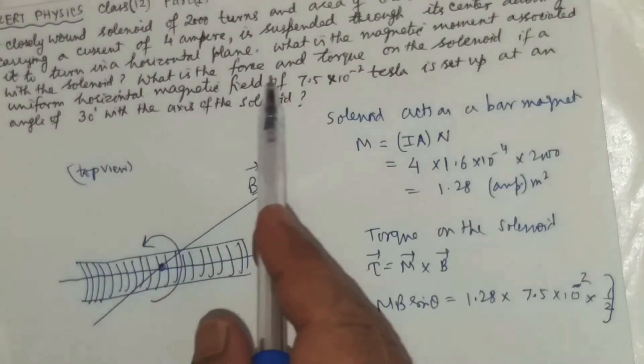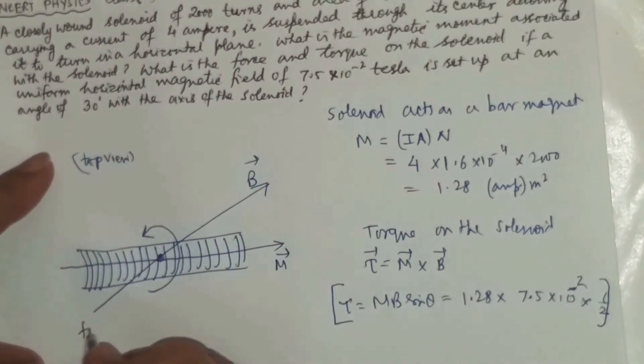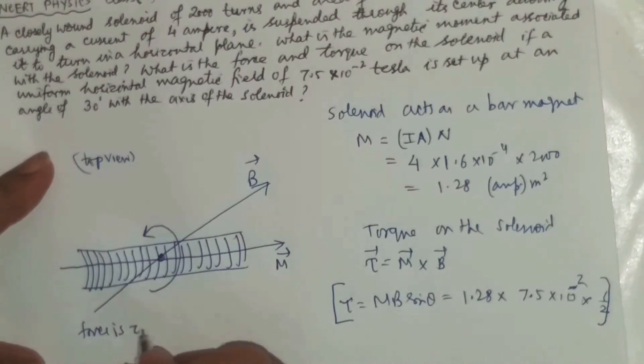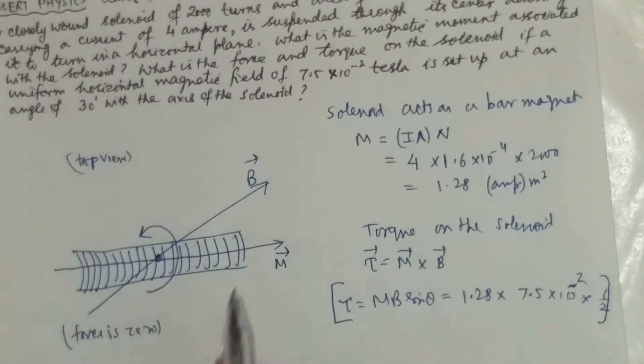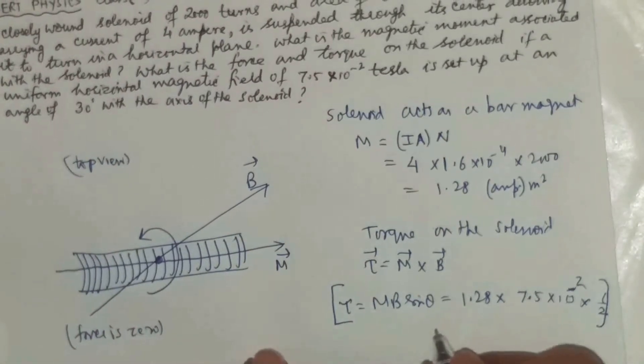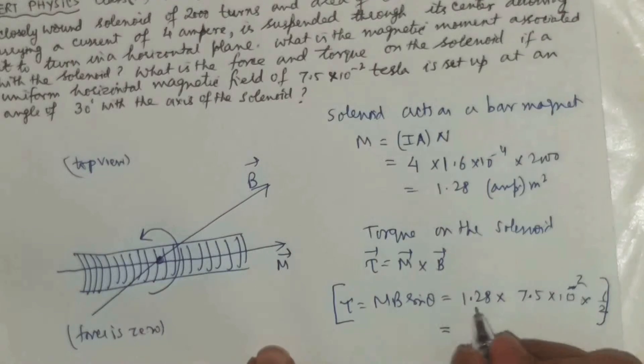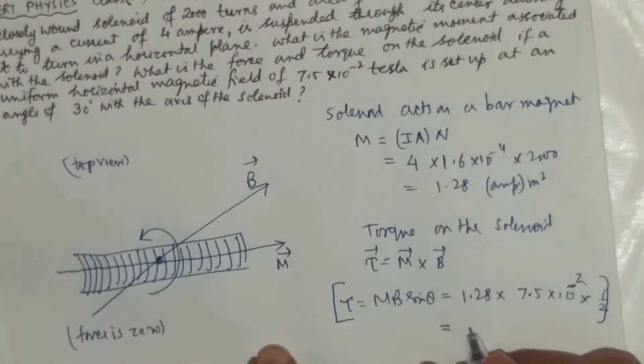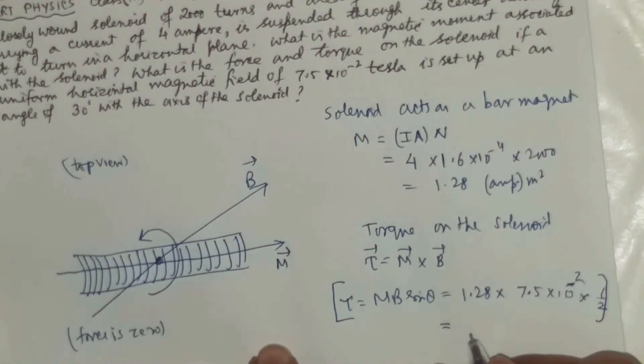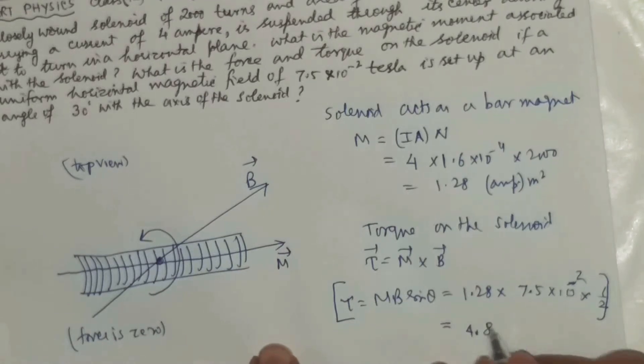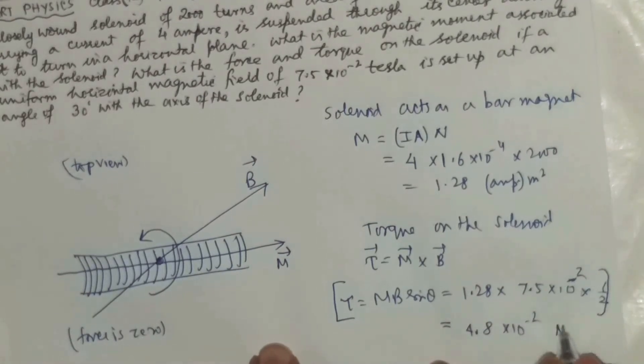Let me check what is the force. Force is zero here. Force is zero because both the ends will be experiencing equal and opposite force. Okay yeah, torque they have told us, let us finish this calculation. It finally comes out to be 4.8×10^-2 Newton meter.